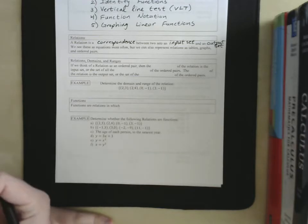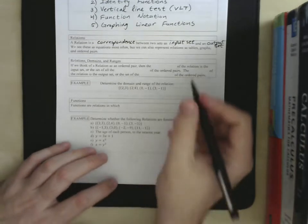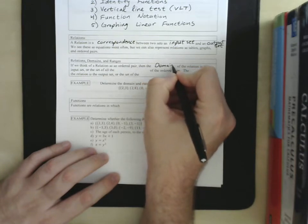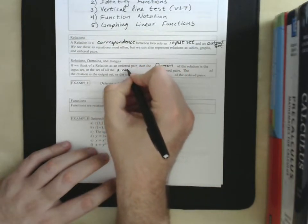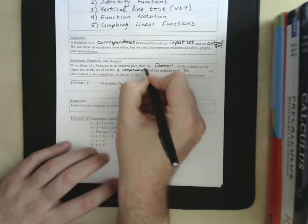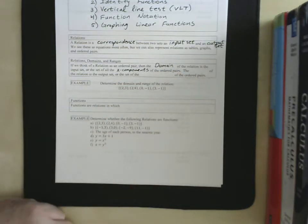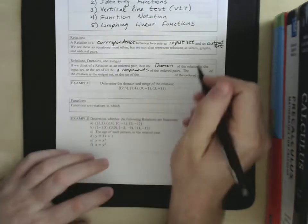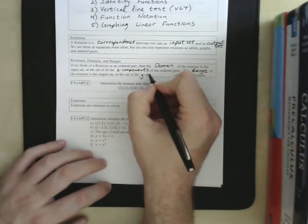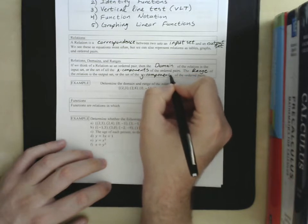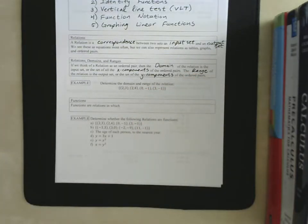If we think of a relation as an ordered pair, then we know that it has an XY component. And the domain of the relation is the input set. It's the X's, set of all the X components, all the ordered pairs that are in that relation, the X components are the inputs or the domain. The range of the relation is the output set or the set of all the Y components of those ordered pairs.